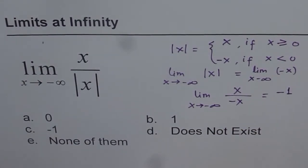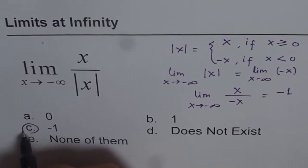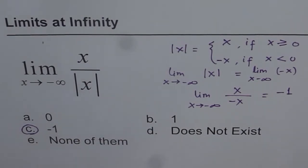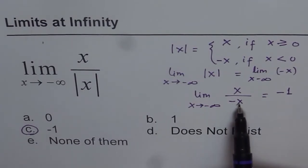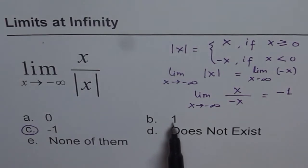Therefore, the answer is c, which is minus 1. It is very important to remember what absolute x is, and therefore we should write this as minus x. I have seen students many times selecting b, x equals 1, which is incorrect.